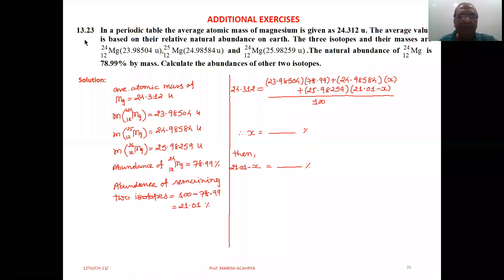13.23 In a periodic table, the average atomic mass of magnesium is given as 24.312u. The average value is based on the relative natural abundance on earth. The three isotopes and their masses are 12mg24,